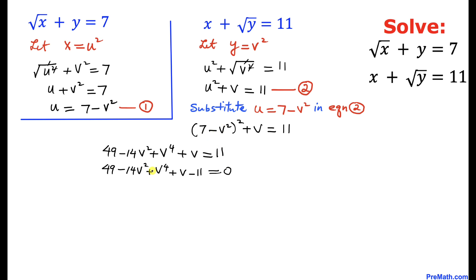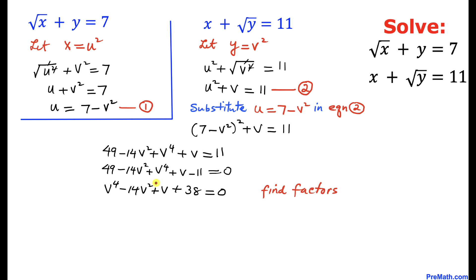Moving 11 to the left-hand side and rearranging in descending order, we get: v to the power 4 minus 14v squared plus v plus 38 equals 0. We can see the coefficient of v squared is negative 14 and the coefficient of v is 1.